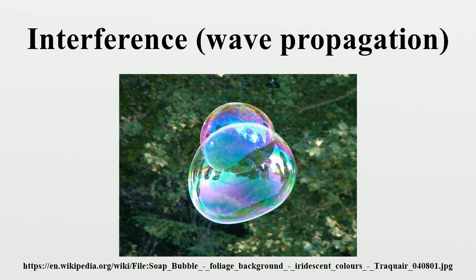It is also possible to observe interference fringes using white light. A white light fringe pattern can be considered to be made up of a spectrum of fringe patterns each of slightly different spacing. If all the fringe patterns are in phase in the center, then the fringes will increase in size as the wavelength decreases and the summed intensity will show three to four fringes of varying color. Young describes this very elegantly in his discussion of two-slit interference. Since white light fringes are obtained only when the two waves have traveled equal distances from the light source, they can be very useful in interferometry, as they allow the zero-path difference fringe to be identified.